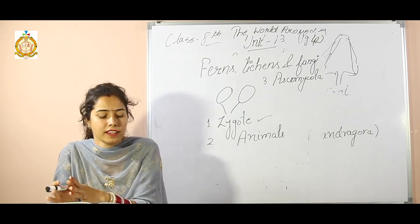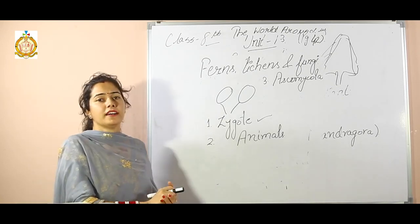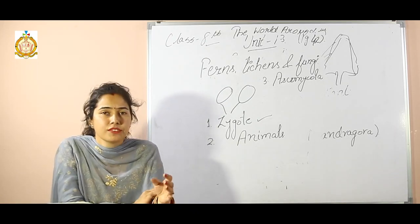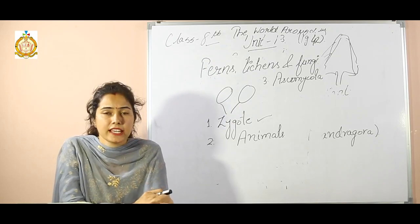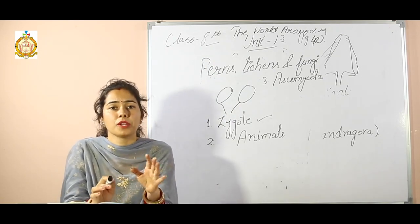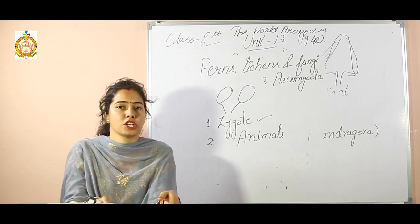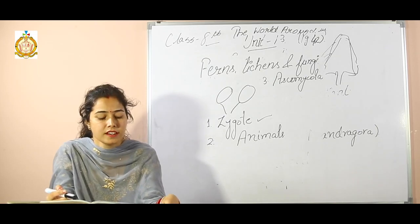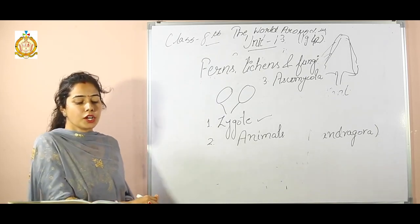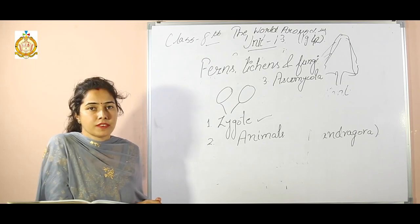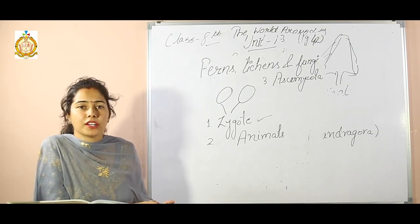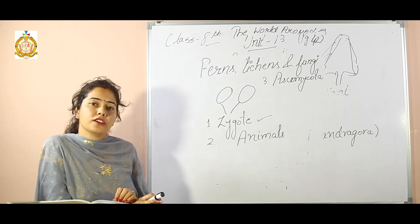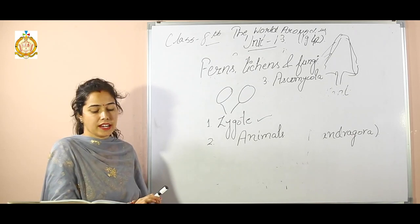Now part B: true or false. The first one: fungi reproduce only asexually? No, fungi reproduce both by sexual method and asexual method, so it is false. The second question: diseases of animals caused by fungi are called mycoses? This is true.